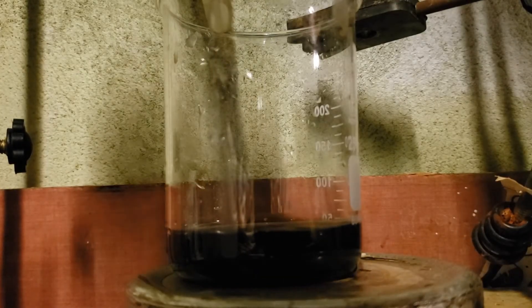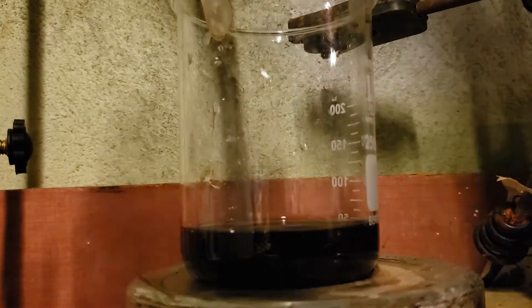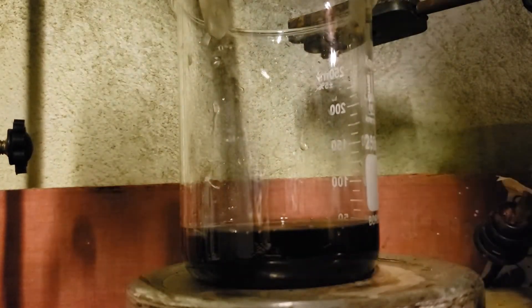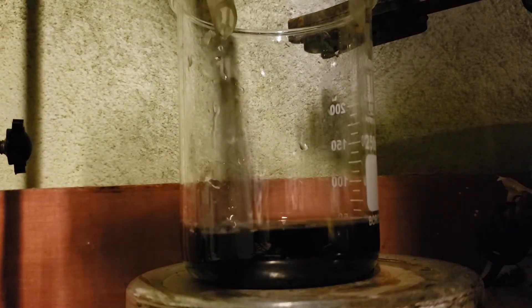After the two hour reflux was up, the reaction mixture was chilled in an ice bath to slightly below room temperature, then transferred to a larger beaker with the aid of a little water. 10% sodium hydroxide solution prepared previously was then titrated in.